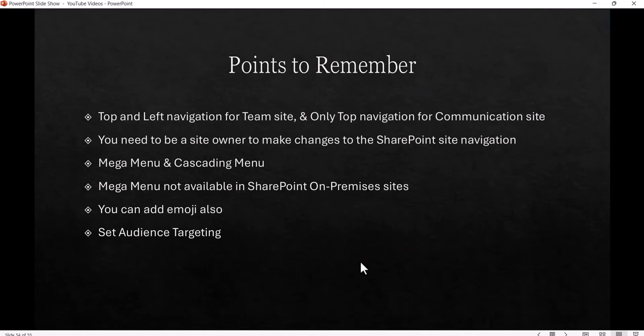First of all, why do we need the quick launch or left navigation in a SharePoint team site or communication site? Because we want people to find important information quickly — they just click on it and get the information. A team site gives you top and left navigation; a communication site gives only top navigation. You need to be a site owner to make changes. I'll also show mega menu and cascading menu, and how to add emoji and set target audience.